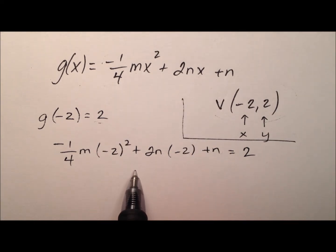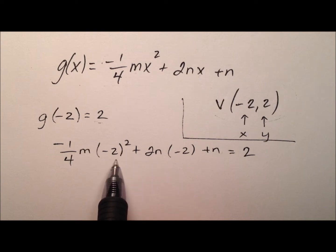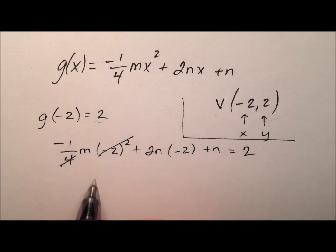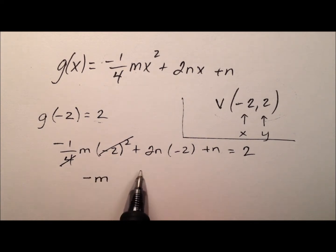So, negative 2 squared, well, negative 2 times negative 2 is positive 4. So, that positive 4 and that positive 4 will cancel each other out. So, it looks like I have negative m and then right here it looks like minus 4n plus n equals 2.